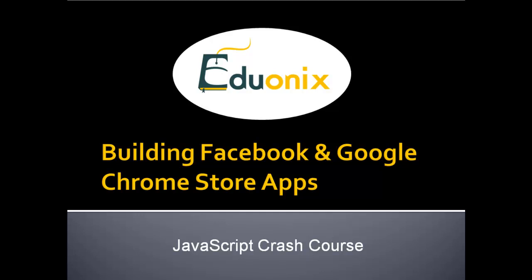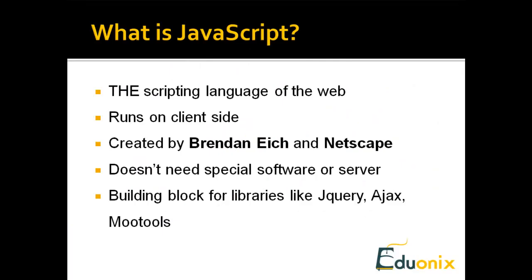In the first section we went over HTML5 and CSS3, and in this section I'd like to go over JavaScript. We're going to be using quite a bit of JavaScript through this series so having a basic understanding is essential. JavaScript is the scripting language of the web, created by Netscape by an individual called Brendan Eich. It's a scripting language that runs on the client side — it doesn't run on the server, it runs on the user's computer. JavaScript is also the building blocks for popular libraries like jQuery and Ajax. jQuery is just JavaScript underneath.